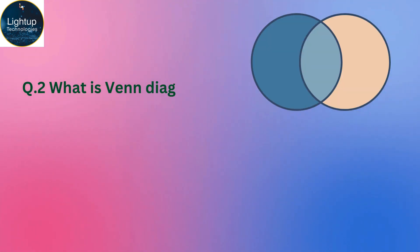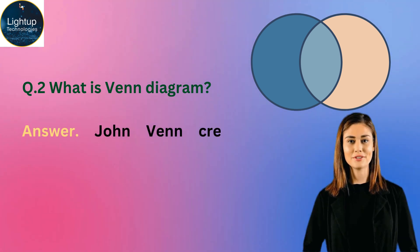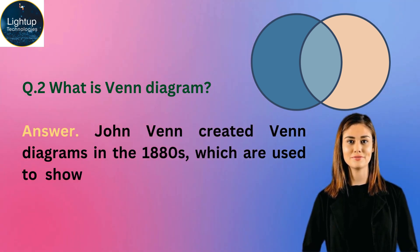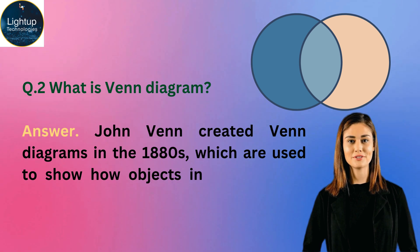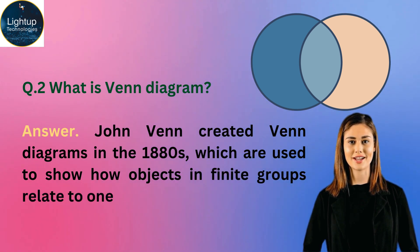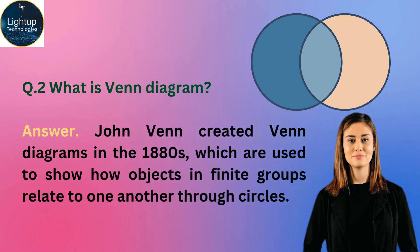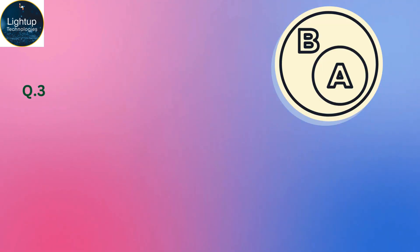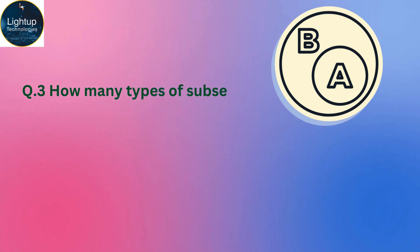What is a Venn diagram? John Venn created Venn diagrams in the 1880s, which are used to show how objects in finite groups relate to one another through circles.